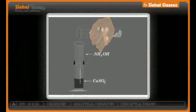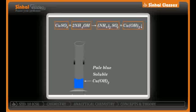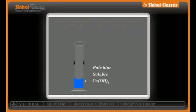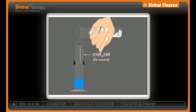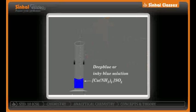Now let's take the fourth example: copper sulfate CuSO4 treated with excess ammonium hydroxide. You will get ammonium sulfate and copper hydroxide Cu(OH)2 — again a precipitate. This copper hydroxide is pale blue in color, but it is soluble in excess of ammonium hydroxide. Take this precipitate along with ammonium sulfate and add excess ammonium hydroxide.